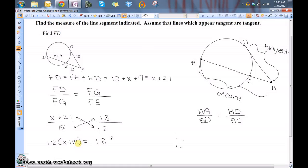So let's just do a little bit of algebra. What is 18 squared? 18 squared is 324. So 12 times x plus 21 is equal to 324.